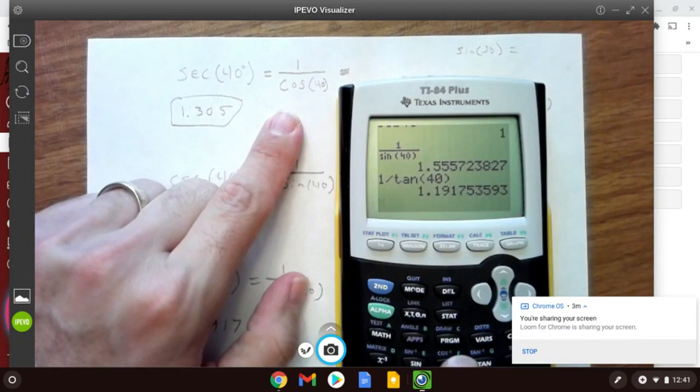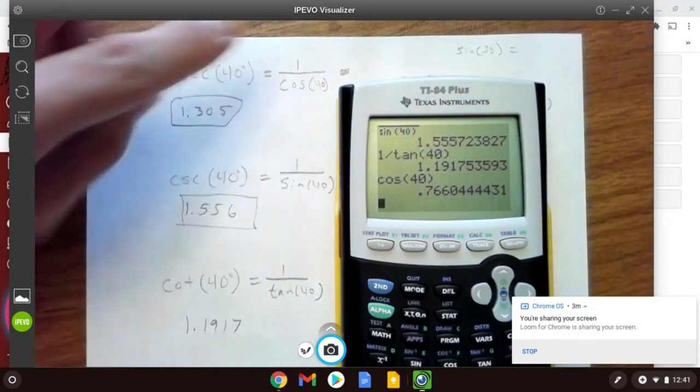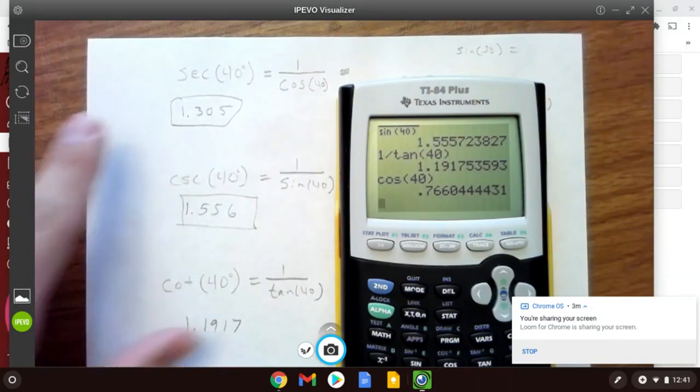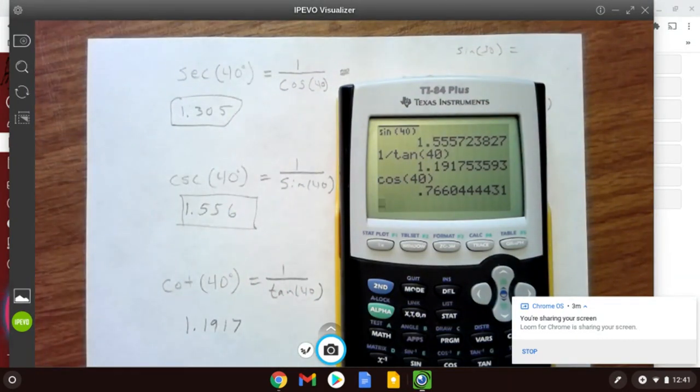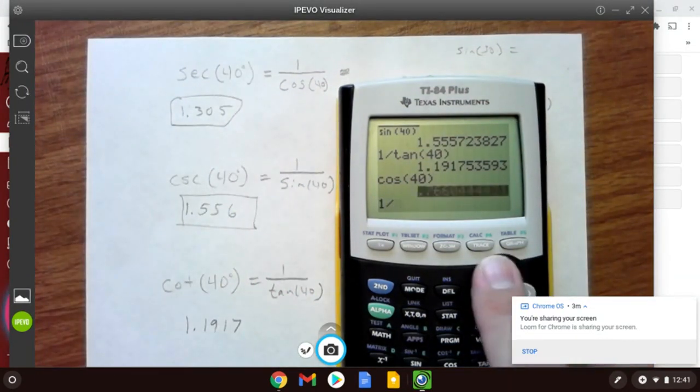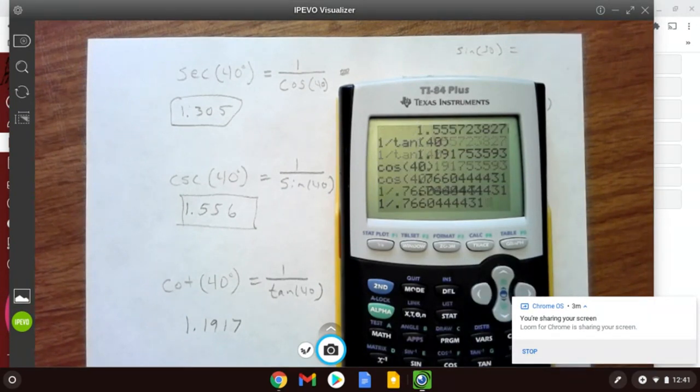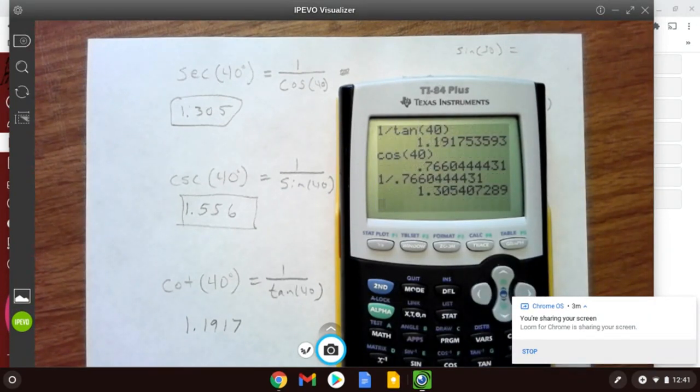So it's just the reciprocals. If we were to look at cosine of 40 and we did 1 divided by that, that would give us 1.305. That's all that's going on.